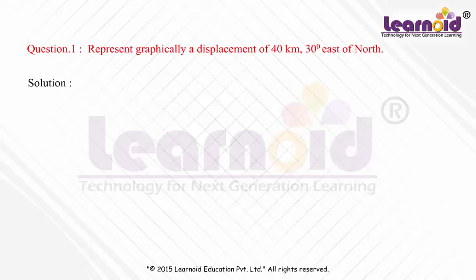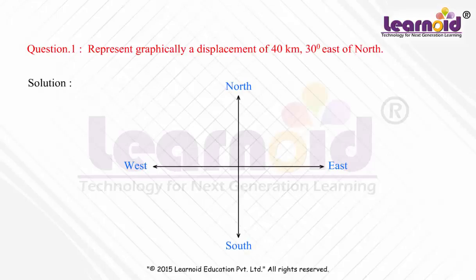To represent direction graphically, we will first draw four directions: north, east, west, and south.